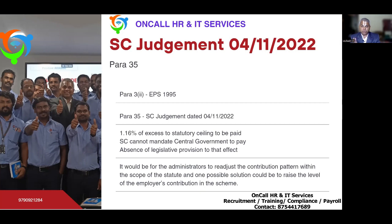The exact words of Para 35 are: 'It would be for the administrators to readjust the contribution pattern within the scope of the statute, and one possible solution could be to raise the level of employer's contribution in the scheme.' Since the act says equal contribution by employer and employee, raising employer contribution would automatically raise employee contribution too — that should not happen. So the 12% total remains the same; only the split within it changes, raising the pension fund portion from 8.33% to 9.49%.